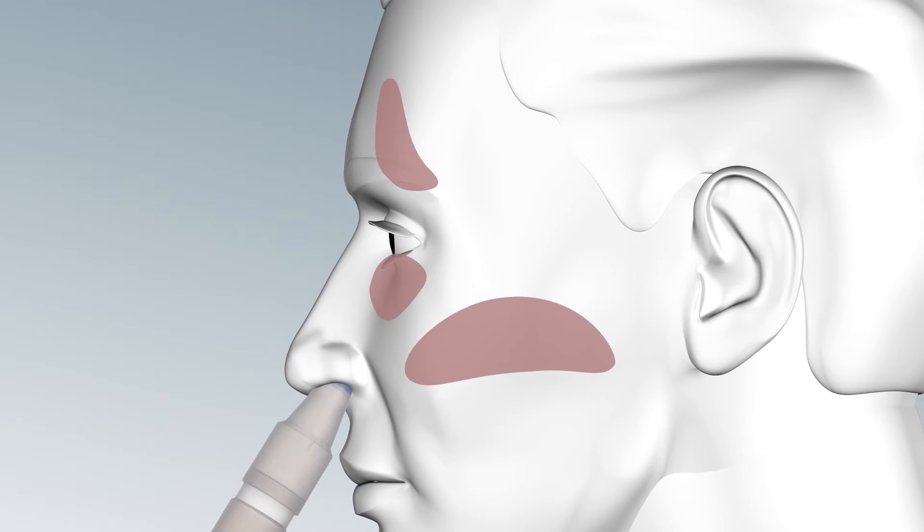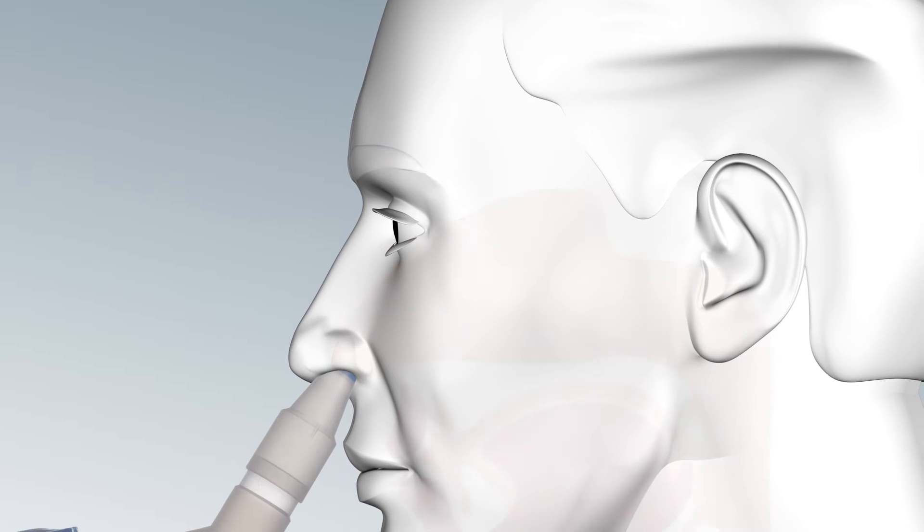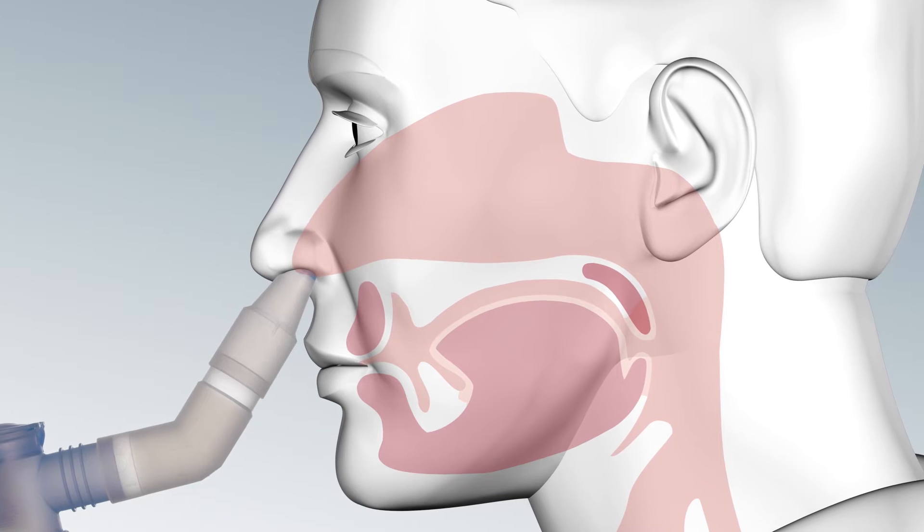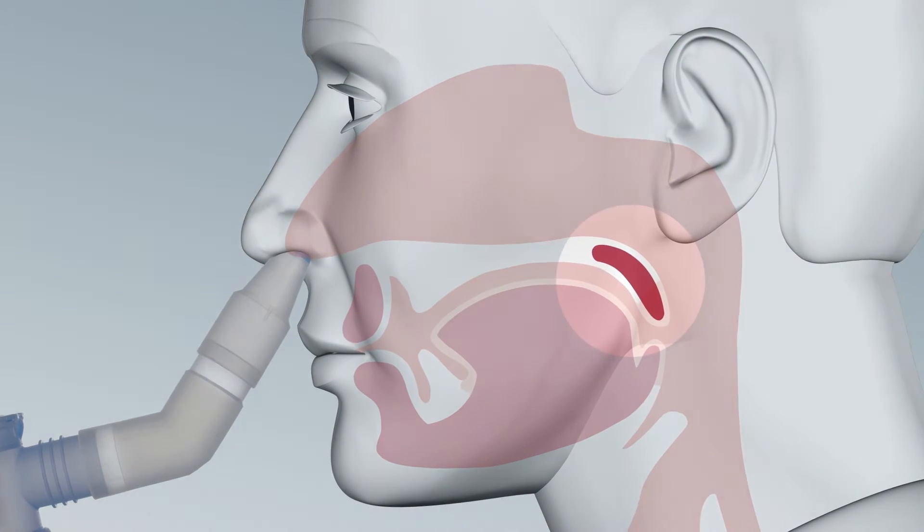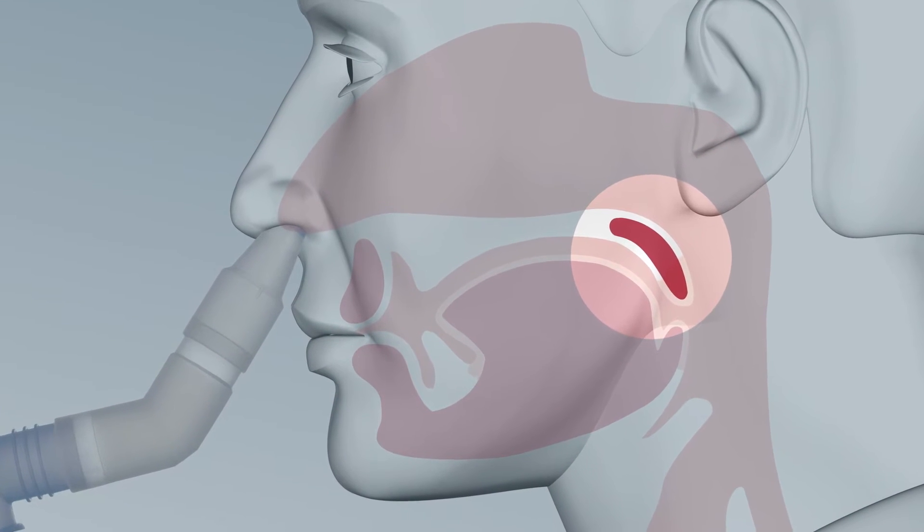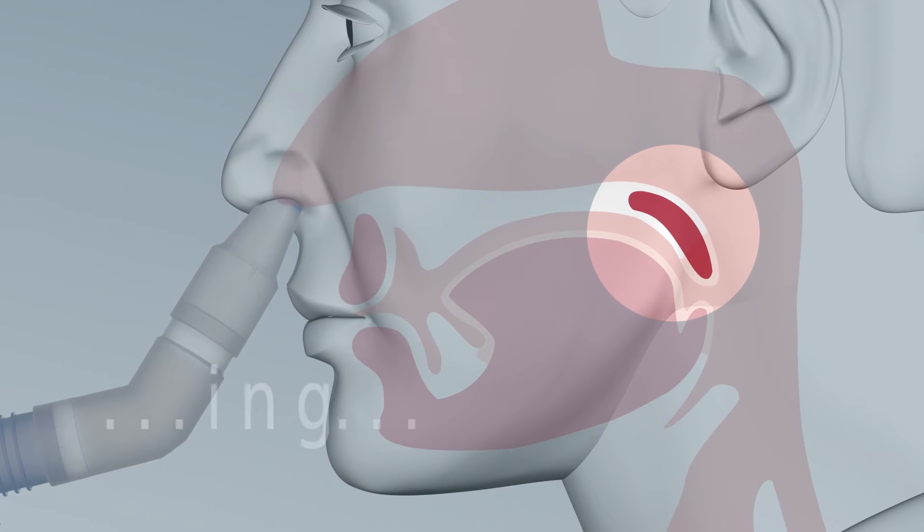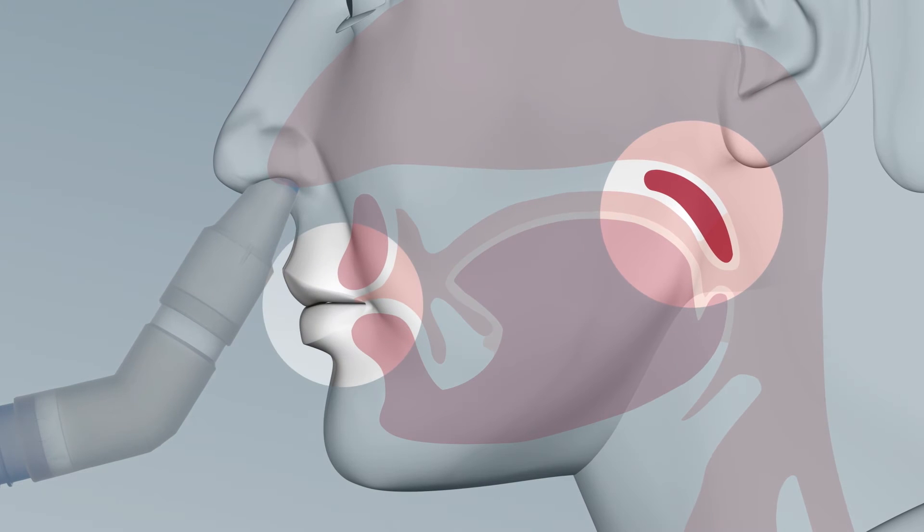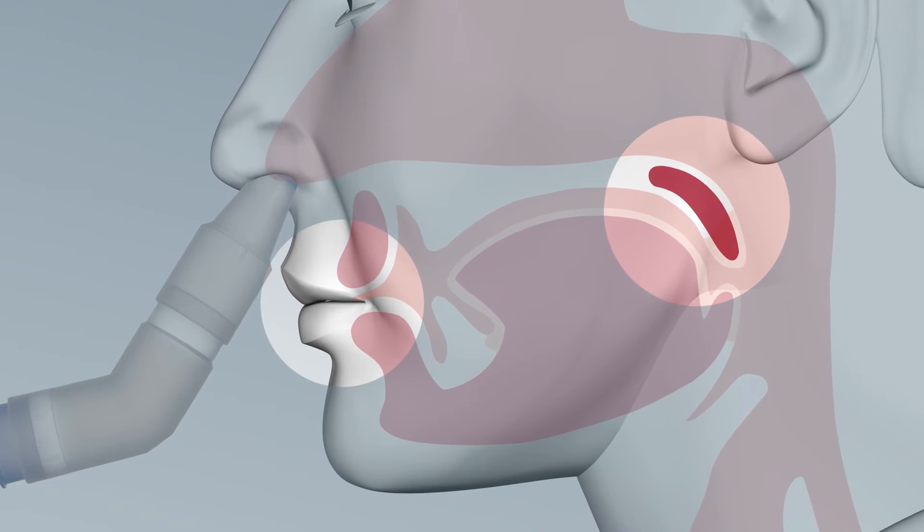Your soft palate should be closed by doing so to block off your nose from your mouth and throat. To close your soft palate, say 'thing' as slowly as possible. Alternatively, slowly breathe in and out through your mouth only, as if you were silently whistling.